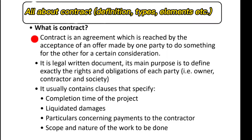A contract is done for a certain consideration. It is a legal written document. Its main purpose is to define exactly the rights and obligations of each party — that is the owner, contractor, and society. It usually contains clauses that specify the completion time of the project, liquidated damages, payment to the contractor, and the scope and nature of the work to be done.